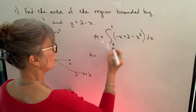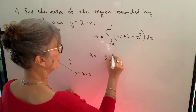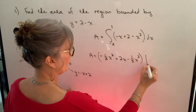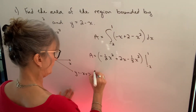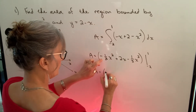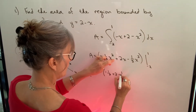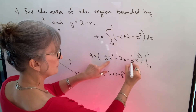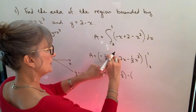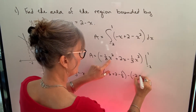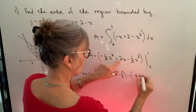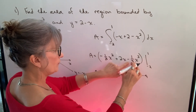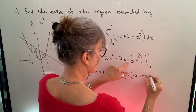We integrate each term to get negative one half x squared plus 2x minus one third x cubed, then evaluate at the bounds. Putting in 1 gives: negative one half plus 2 minus one third. Putting in negative 2: negative 2 squared is positive 4, so negative one half times 4 is negative 2; 2 times negative 2 is negative 4; negative 2 cubed is negative 8, so negative 8 times one third gives negative 8 thirds, and times another negative gives positive 8 thirds.